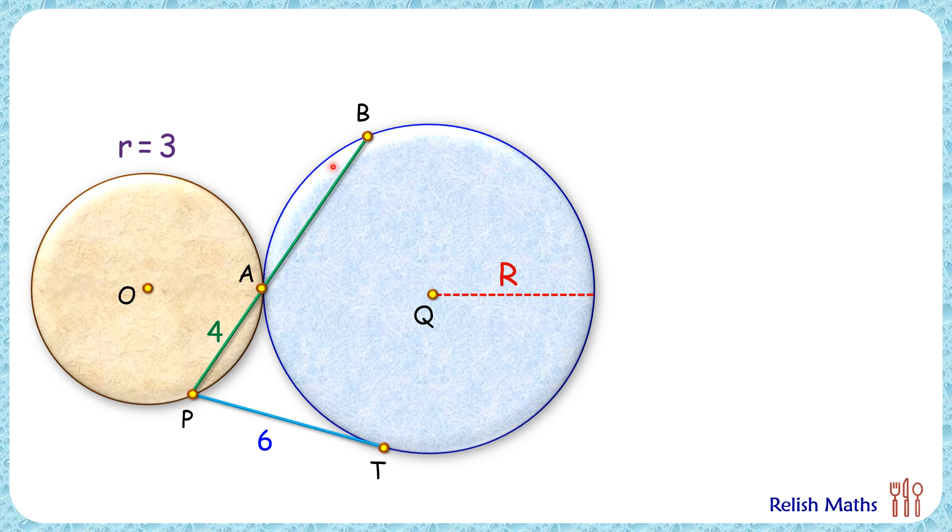So applying tangent secant theorem here, we get PT squared is PA times PB. Putting the values here, PT is 6 centimeters, PA is 4 centimeters. Solving this equation, we'll get PB as 9 centimeters.